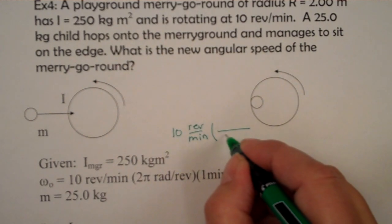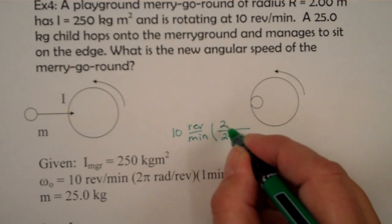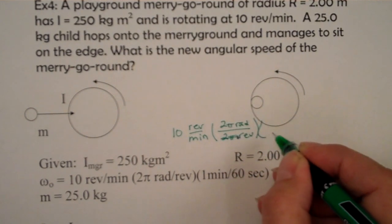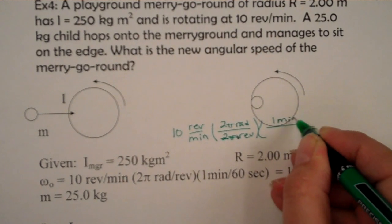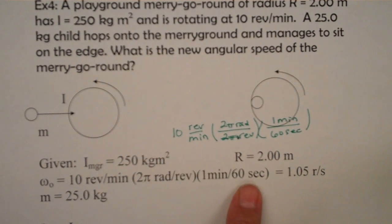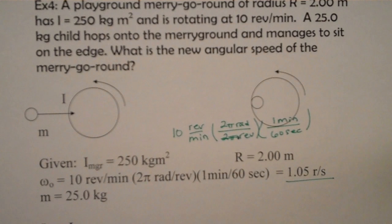we can change this by looking at 2π radians per revolution, and then 1 minute is 60 seconds. And that's the conversion I've done here. It looks like we're going to need to take 10 and multiply it by 2π, divide by 60, and we'll get 1.05 radians per second. And we're told the mass of the child.